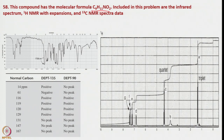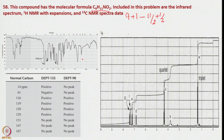Now, coming back to mass NMR-related problems. This compound has molecular formula C9H11NO2. The infrared spectrum, 1H NMR spectrum, and some 13C NMR spectral data are given. You have to identify and write the structural formula. First, calculate the hydrogen deficiency index: (9+1−11)/2 + 0.5 = 5. So the hydrogen deficiency index is 5, indicating at least one ring plus additional degrees of unsaturation.